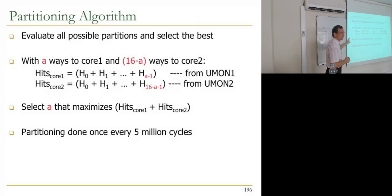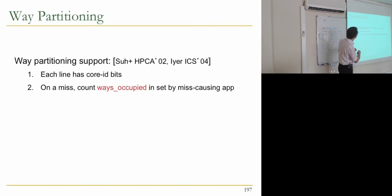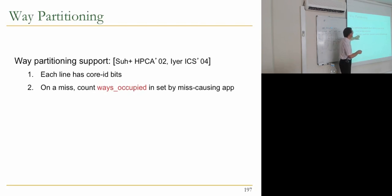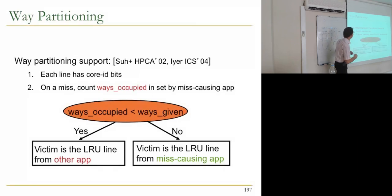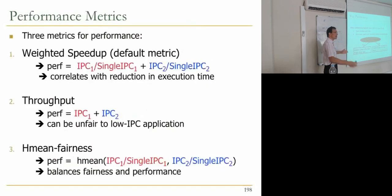This algorithm needs fixing and requires way partitioning support provided in previous work. Each cache line has core ID bits. On a miss, we look at the number of ways occupied in a set by the miss-causing application. If it's less than the ways given to that application, we can allocate one more block. Otherwise, we pick the LRU line from the miss-causing application, since it already exhausts the ways it's been given.